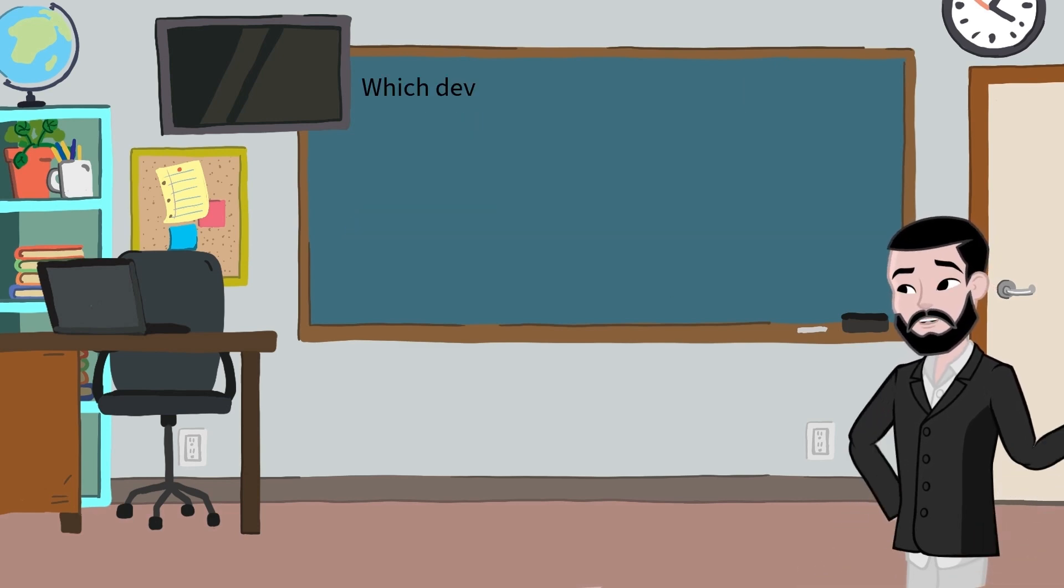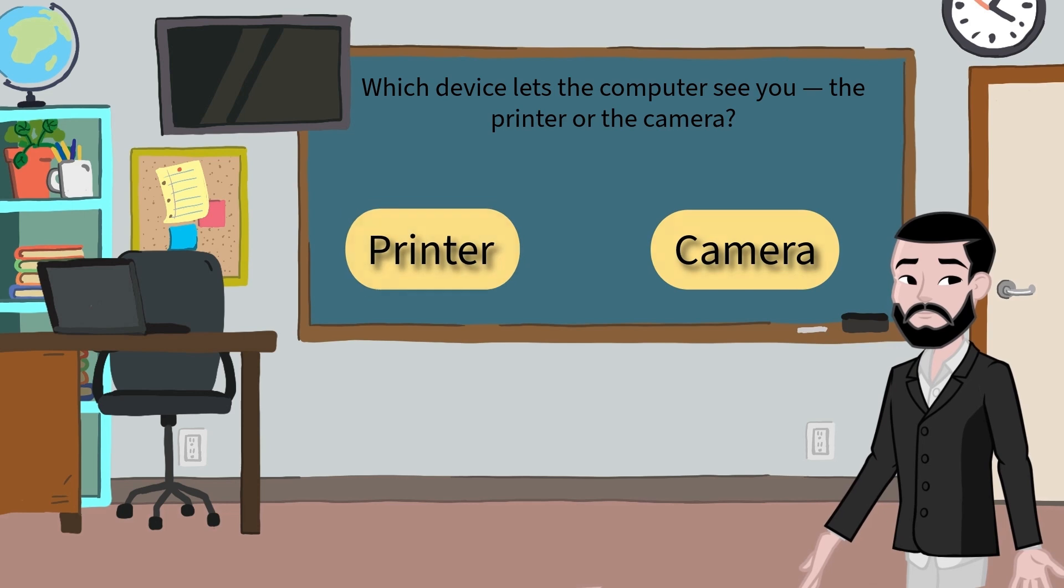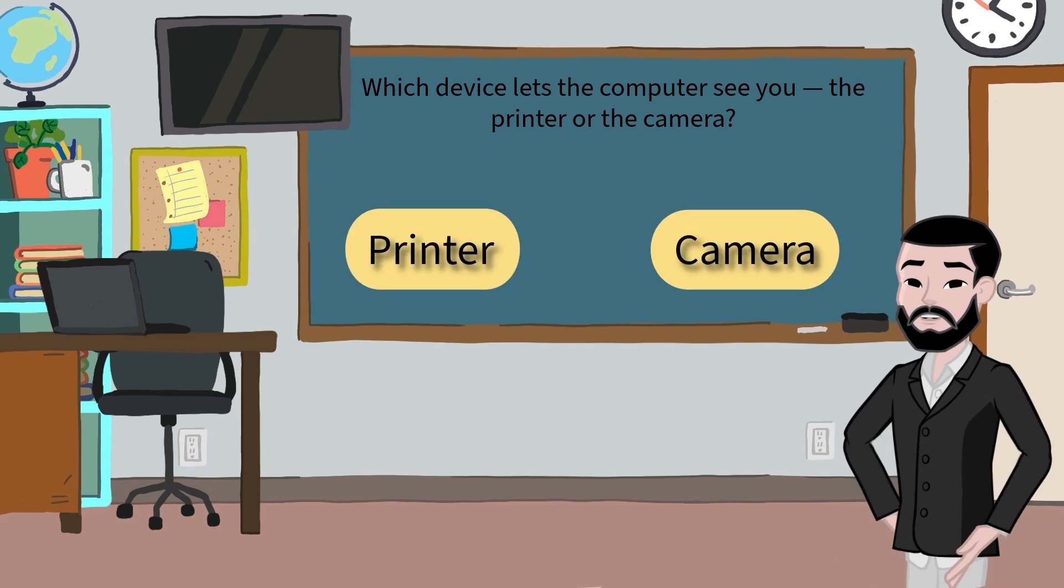Question 3. Which device lets the computer see you? The printer or the camera? You got it. The camera is an input device that captures images.